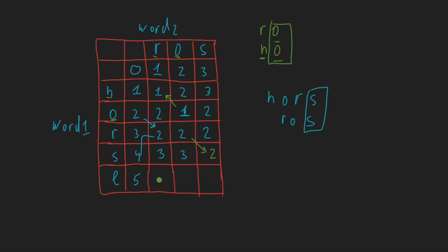Now we finalize our solution by comparing e with r — not equal — so minimum of those values plus one: three plus one gives four. Then e compared to o — not equal — gives four again. Finally, e compared to s — not equal — minimum of three, four, and two gives two, plus one equals three. That is the value we return.